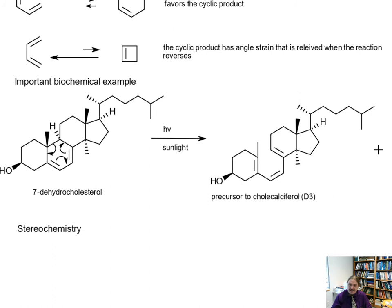There's actually one more pericyclic reaction that needs to happen—it's a sigmatropic rearrangement. When we get to the video on sigmatropic rearrangements, I will show you that second step in the conversion of dehydrocholesterol to cholecalciferol.